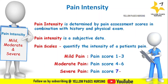In mild pain, the patient's score ranges from one to three. In moderate pain, the score ranges between four and six. In severe pain, the score ranges between seven and ten. This completes the classification of pain.